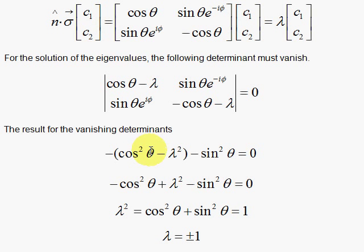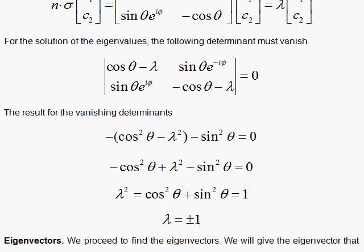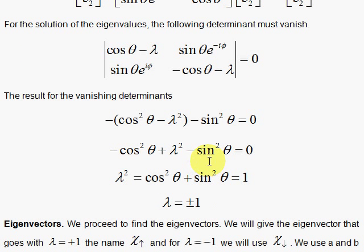We get cosine squared theta minus lambda squared, then subtract sine squared theta. Note that e to the plus i phi times e to the minus i phi equals e to the zeroth power, which is 1, so those go away. Multiplying through by minus 1 and rearranging, you get lambda squared equals cosine squared theta plus sine squared theta, which equals 1. So lambda is plus or minus 1.